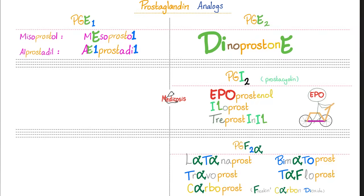Let's talk about prostaglandin analogs. Prostaglandin E1 analogs include misoprostol and alprostadil. Prostaglandin E2 is dinoprostone — 'di' for 2 and 'E' for E2. Prostaglandin I2 is prostacyclin, which keeps the blood cycling. The analog is epoprostenol — there are also iloprost and treprostinil. Two I's, so I2. The side-effects mnemonic: EPO because epoprostenol.